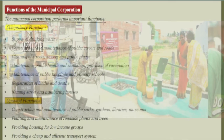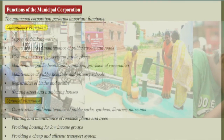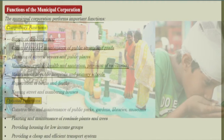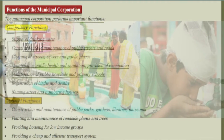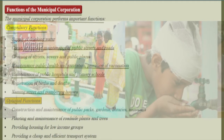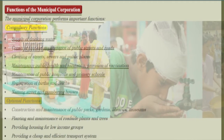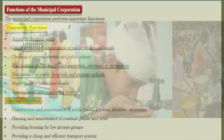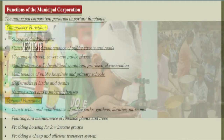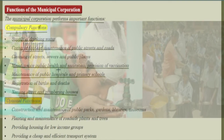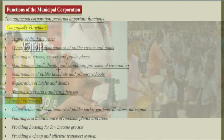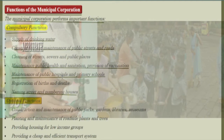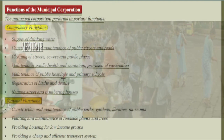Functions of the municipal corporation: The municipal corporation performs some important functions. Compulsory functions include supply of drinking water, construction and maintenance of public streets and roads, cleaning of streets, sewers, and public places, maintenance of public health and sanitation, provision of vaccination, and maintenance of public hospitals.